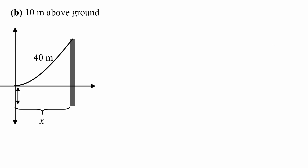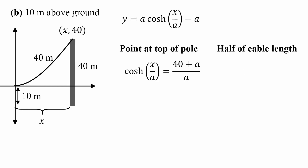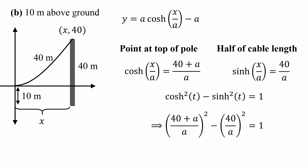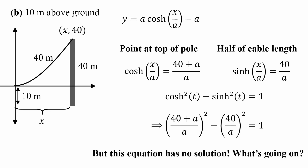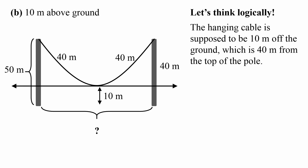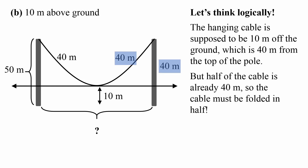So how do we solve the next problem — what if the cable is only hanging 10 meters above the ground? Suppose you try the same exact method. The top of the pole will now be at the coordinate (x, 40), so we use the same equations and substitute in the new values. When you substitute into the hyperbolic identity, you get a new equation, and if you try to solve it, you run into a problem: this equation has no solution. So what is going on?